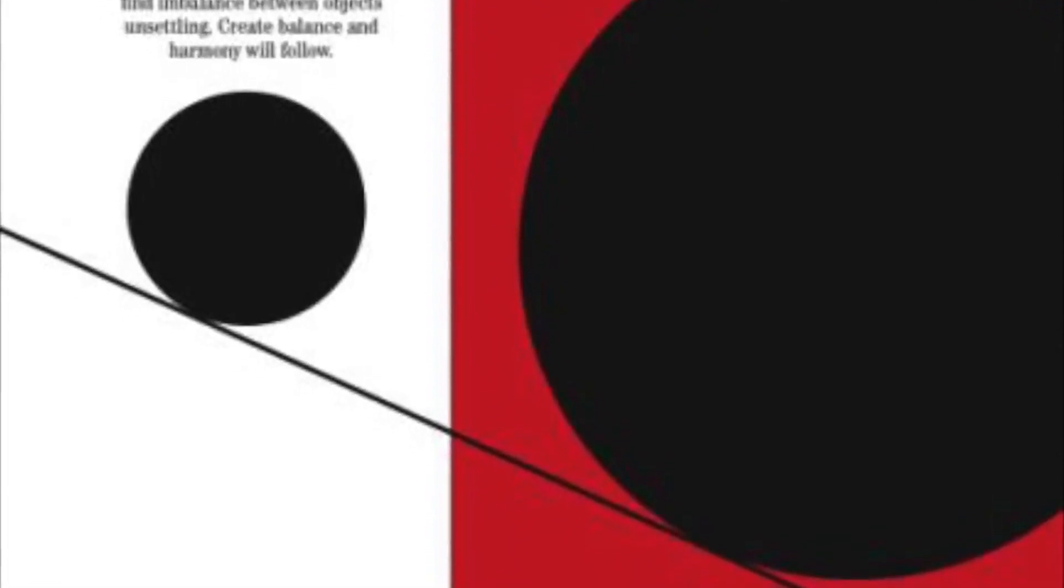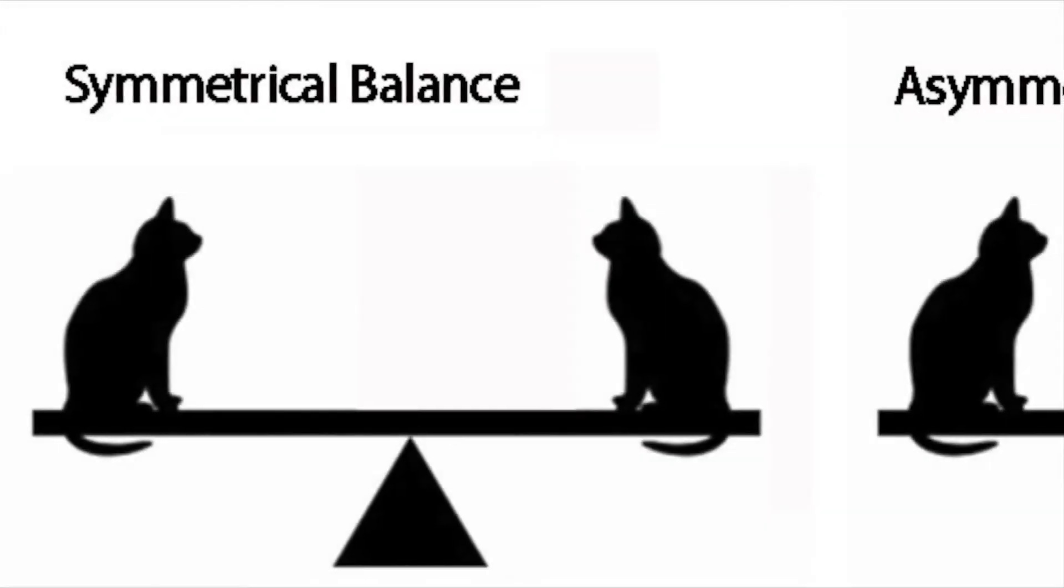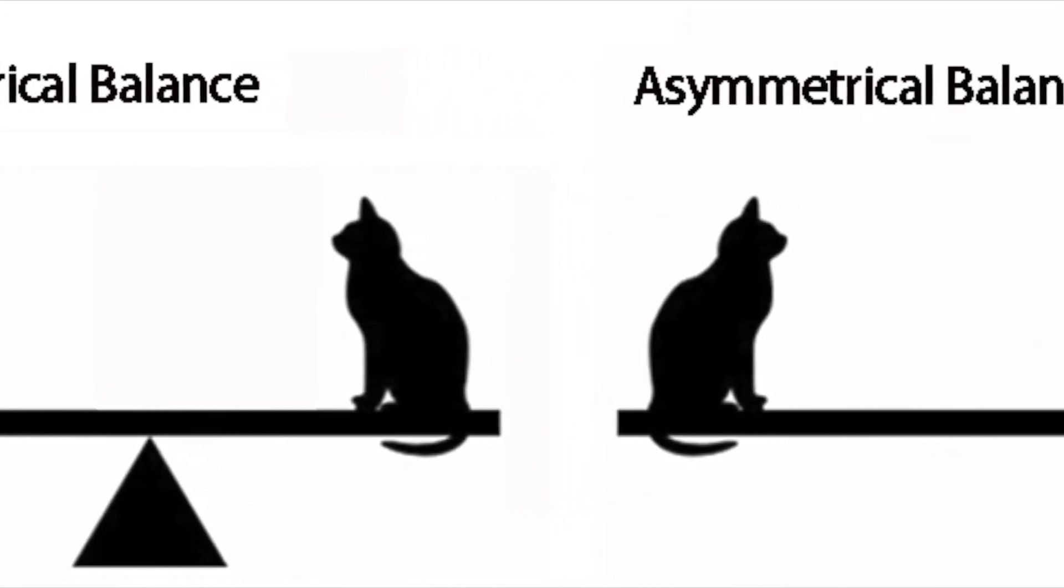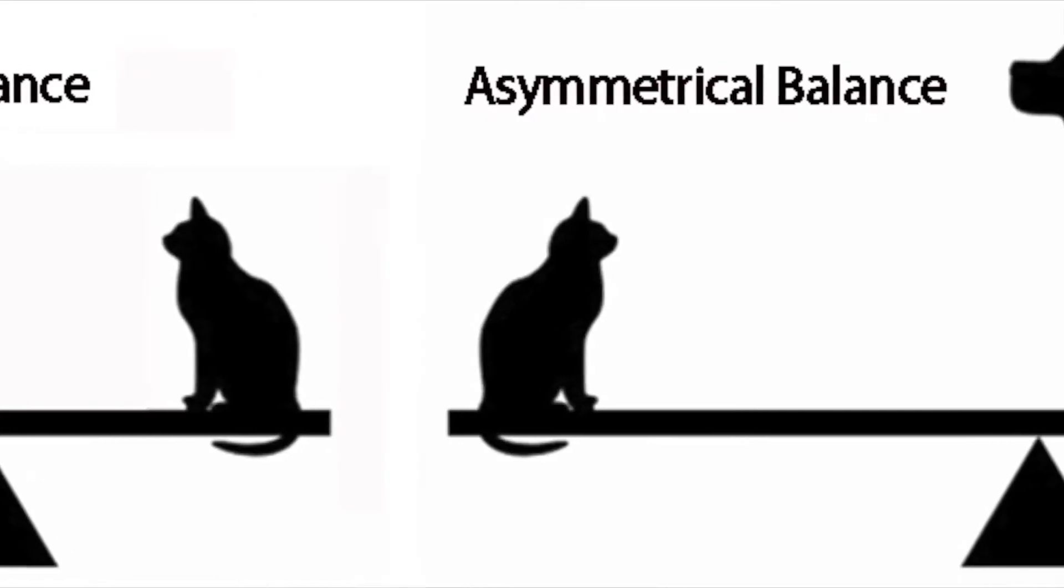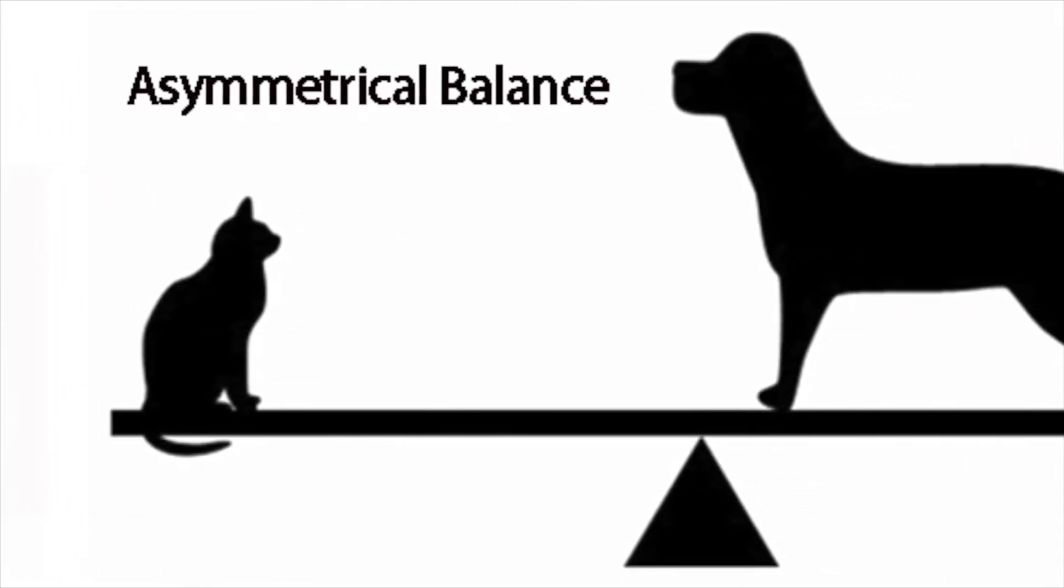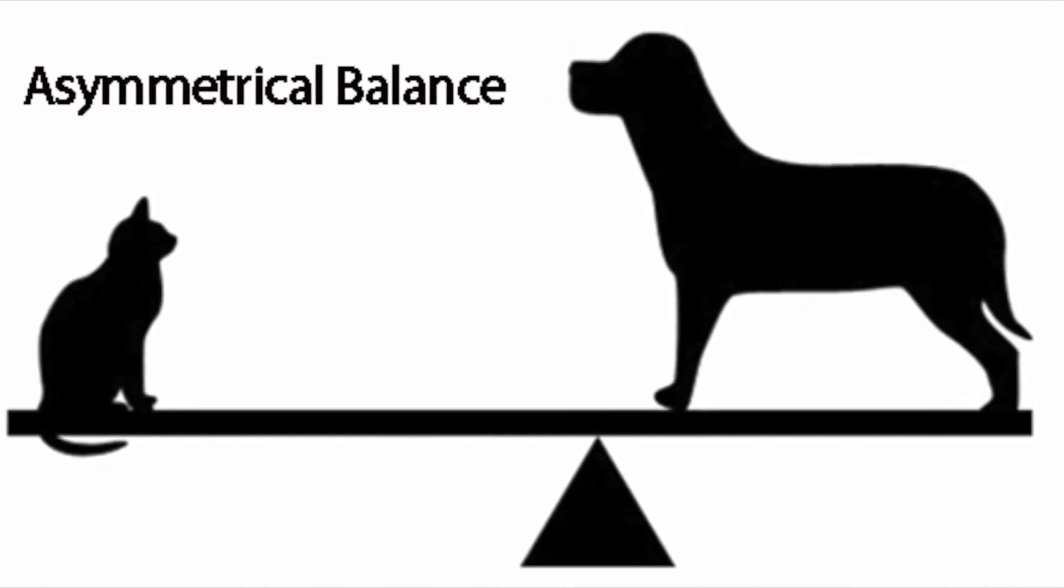Without balance, we feel unstable and experience anxiety. With balance, we are calm and peaceful. Balance may be symmetrical, which is aligned, or asymmetrical, which is non-aligned. Balance creates mood of calm or relaxation. A lack of balance creates unrest and tension.